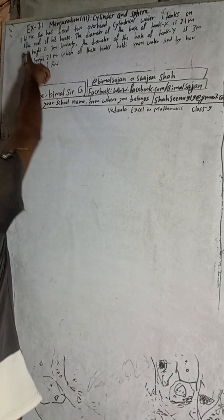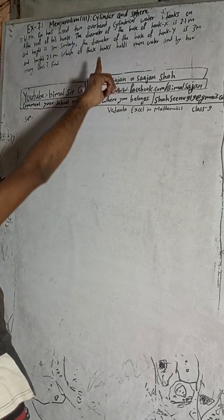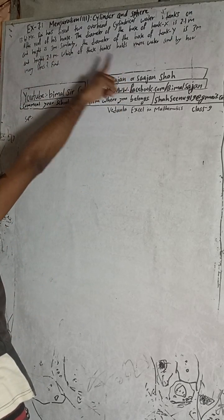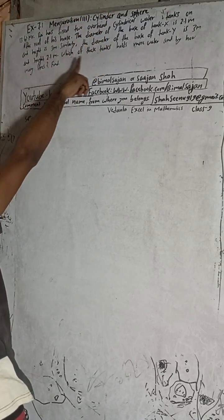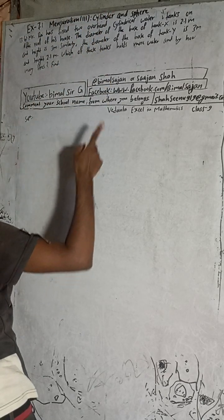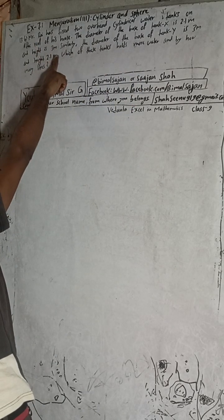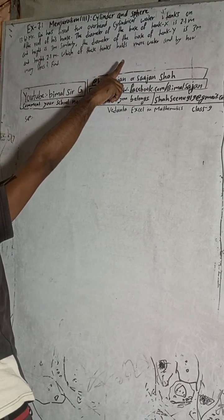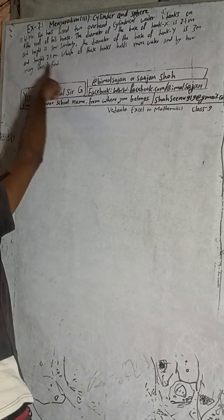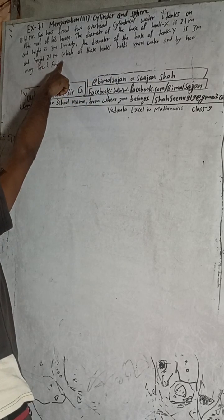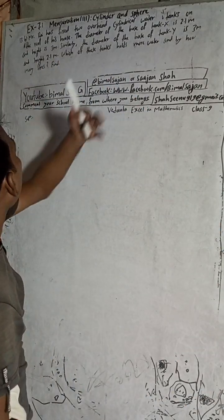The question is: Mr. Rai has fixed two overhead cylindrical water tanks on the roof of his house. The diameter of the base of tank X is 2.1 meters and height is 3 meters. Similarly, the diameter of the base of tank Y is 3 meters and height is 2.1 meters. Which of these tanks holds more water and by how many liters?